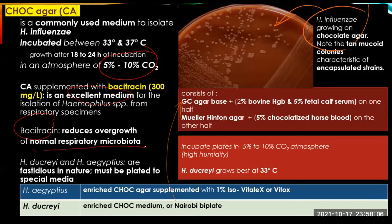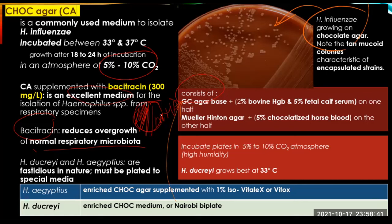Special media include enriched chocolate agar supplemented with 1% iso-vitalex or vitox. For H. ducreyi, enriched chocolate medium or the Nairobi plate is required. The Nairobi plate consists of GC agar base on one half and Mueller-Hinton agar (MHA) on the other half. The plates need to be incubated in a 5 to 10% CO2 atmosphere with high humidity. Please remember that H. ducreyi grows best at 33 degrees Celsius.